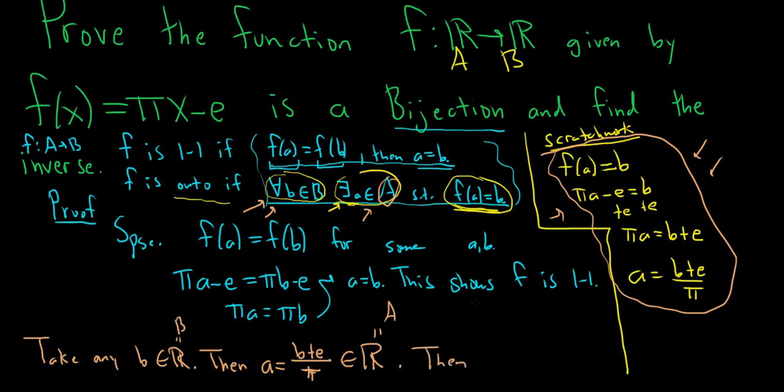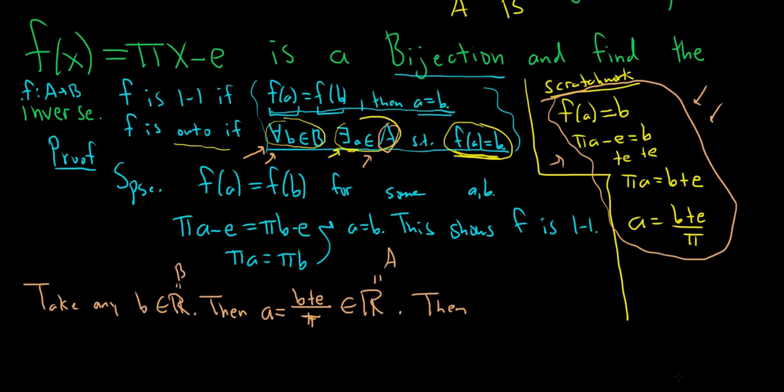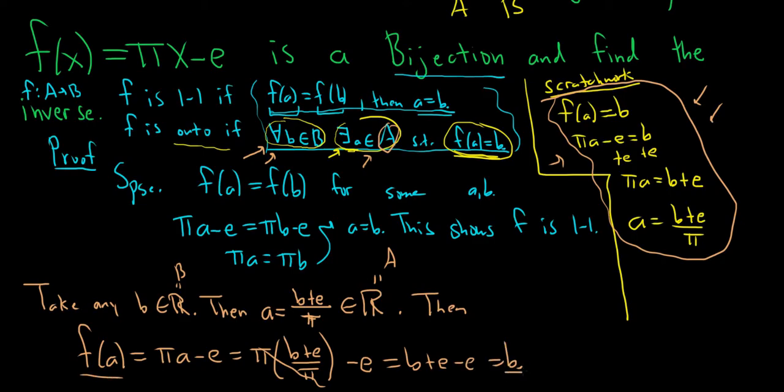Then, we just have to make sure f(a) = b. So f(a) = πa - e. That's equal to π, well, a is (b + e)/π, and that's minus e. And the π's cancel. Oh, this is the best part. b + e - e, which is equal to b. So then f(a) = b.